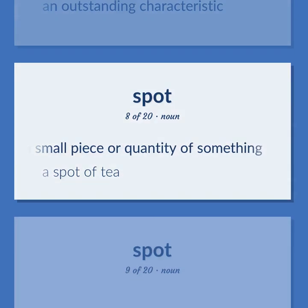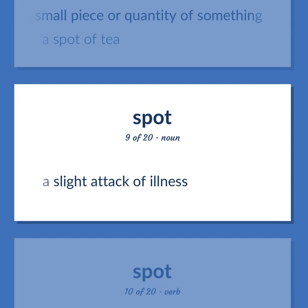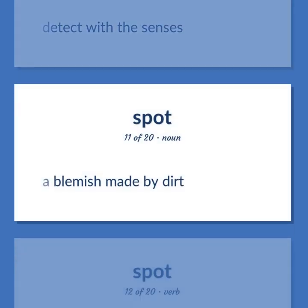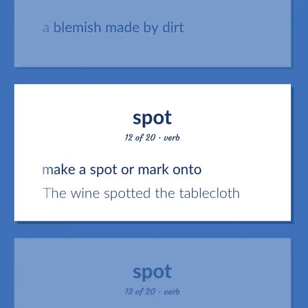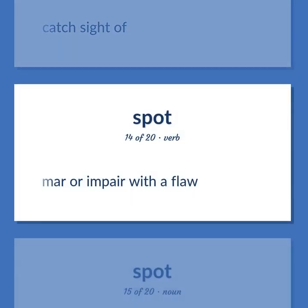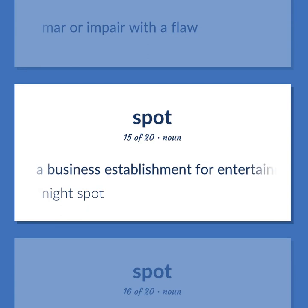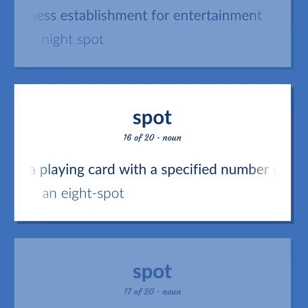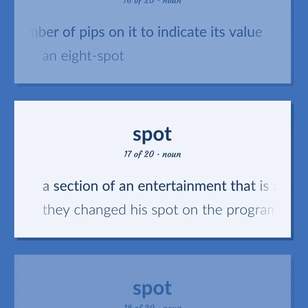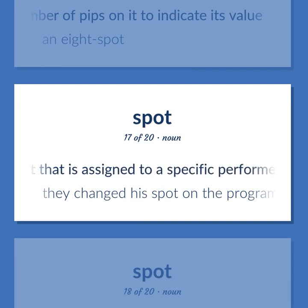Spot: a slight attack of illness. Detect with the senses. A blemish made by dirt. Make a spot or mark onto — 'The wine spotted the tablecloth.' Catch sight of. Mar or impair with a flaw. A business establishment for entertainment — night spot. A playing card with a specified number of pips on it to indicate its value — an eight spot. A section of an entertainment assigned to a specific performer or performance — 'They changed his spot on the program.'